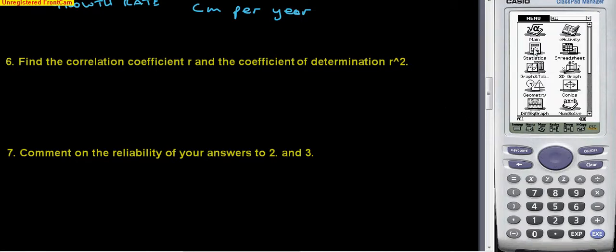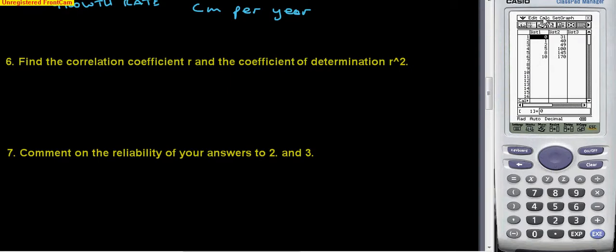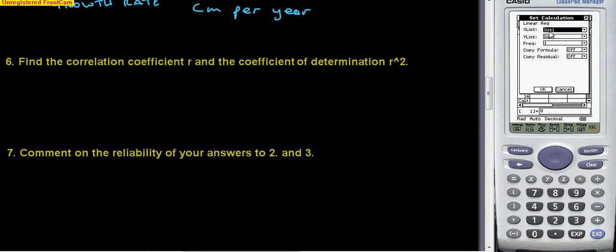I need to go to the stats part where I've got my numbers in the lists. I have to do the calc. I could have got this earlier when I did the linear regression. Make sure you're using list one and list two. After you've got the a and b, underneath that is r and r², so I just need to write those down.